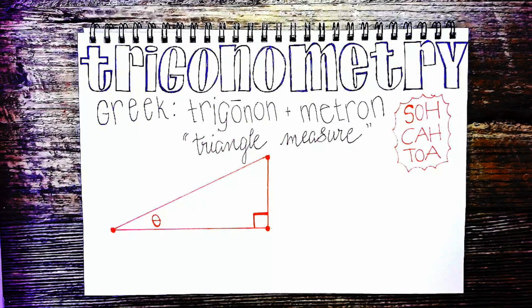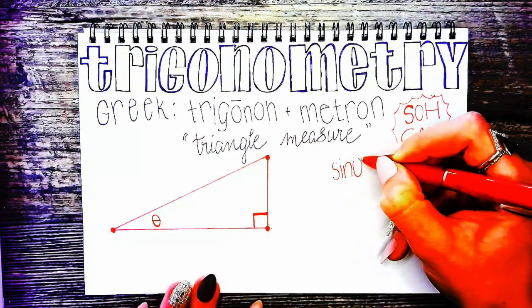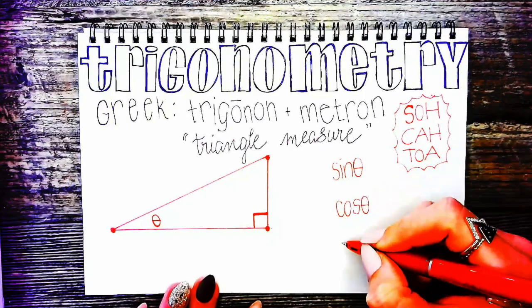The mnemonic device SOHCAHTOA relates to these right triangles because we use it to remember the ratios of sine theta, cosine theta, and tangent theta.